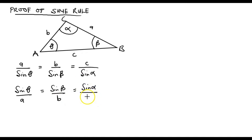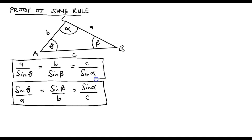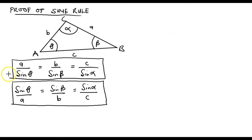So either form of the Sine Rule is valid. Now, how do we prove it? Considering triangle ABC — this triangle is not a right angle triangle — so how was the Sine Rule deduced from it? We can actually introduce a perpendicular height from the vertex C all the way down to meet AB.